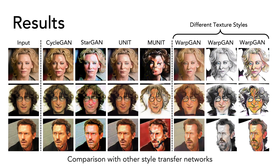Now for the fun part, here are some results comparing our method to other style transfer networks such as CycleGAN and UNIT. Style transfer methods merely translate the style of the caricature while completely disregarding the exaggerations. In comparison, WarpGAN is able to change both texture and the shape of the input face. Also, because style transfer networks try to compensate for large shape differences between caricatures and photos via texture, their output often has worse visual quality on this task. Note that all input images and identities in the results section are from the test data only.